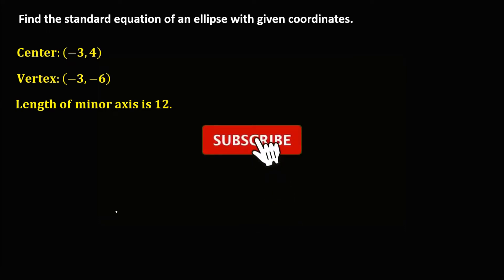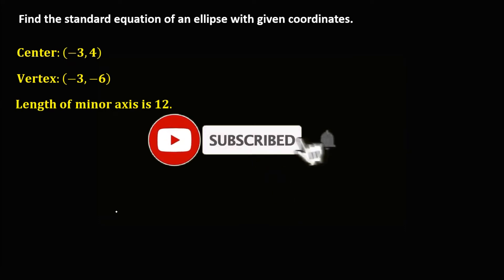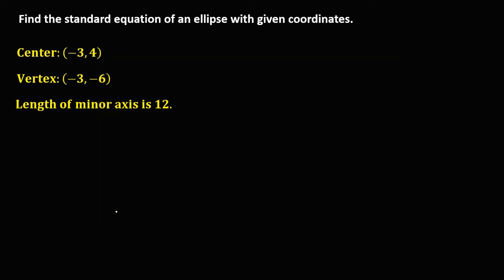Let's solve this problem. Find the standard equation of an ellipse with the given coordinates. We have the center, the vertex, and the length of the minor axis.